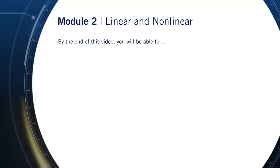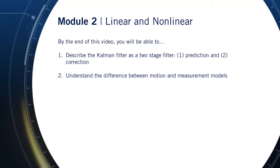By the end of this lesson, you'll be able to describe the Kalman Filter as a state estimator that works in two stages, prediction and correction. Understand the difference between motion and measurement models, and then use the Kalman Filter formulation in a simple 1D localization example.